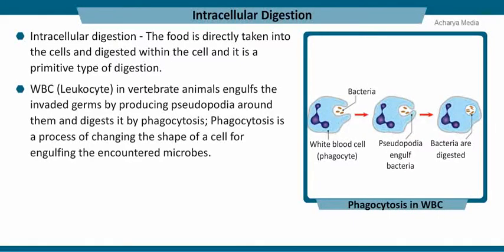WBC, otherwise called leukocytes, in the vertebrate body engulfs the invaded germs by producing pseudopodia around them and digests them by phagocytosis. Phagocytosis is a process of changing the shape of a cell for engulfing the encountered microbes.